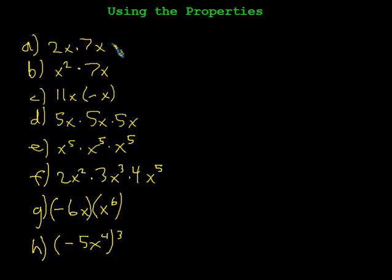Okay. Here we go. Let's try this. I'm going to go ahead and use the commutative property of multiplication to move the 2 times the 7 and the x times the x. And that gets me 14x squared.